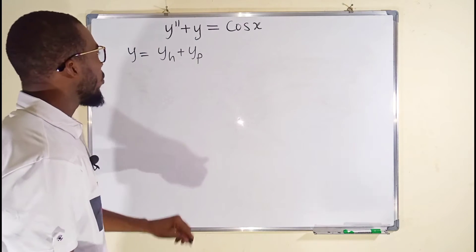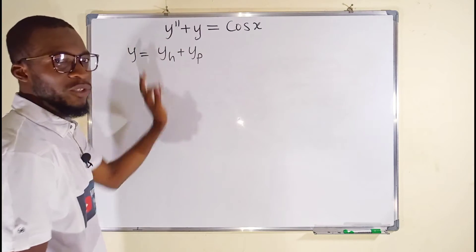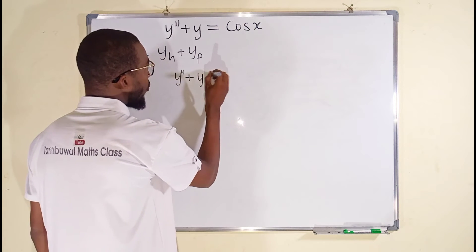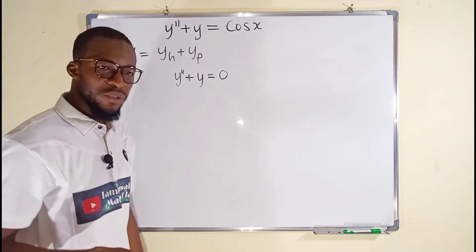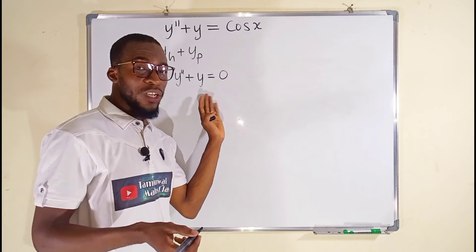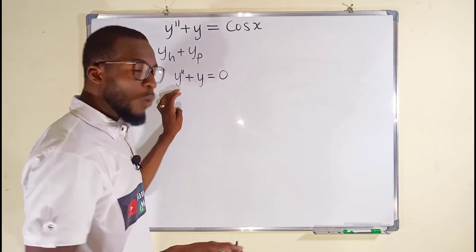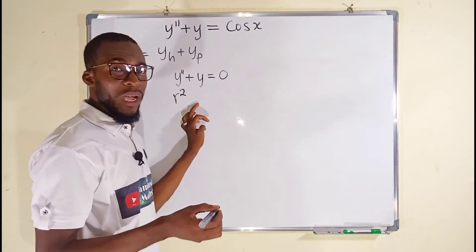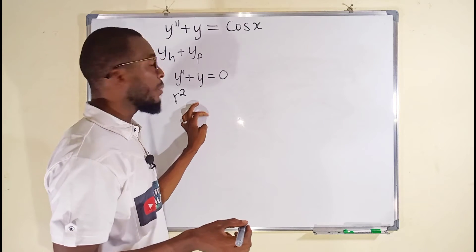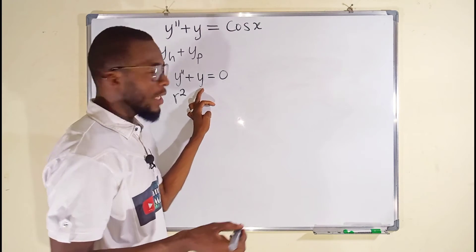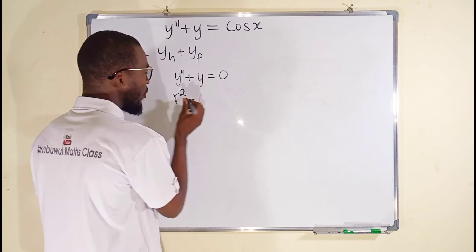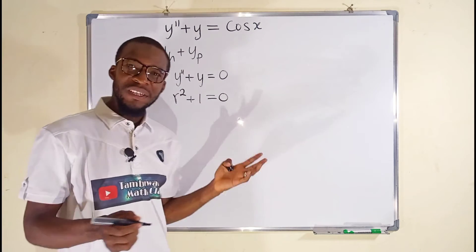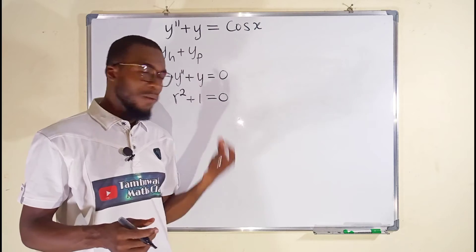To find y sub h, we are going to set the right-hand side to be equal to 0, then solve for the homogeneous equation. We have y double prime plus y equal to 0. Next, we are going to transform this into an auxiliary equation by setting y double prime equal to r squared. Since y prime is absent, we set y equal to 1, giving us r squared plus 1 equal to 0. This is a quadratic equation and we need to find its roots.